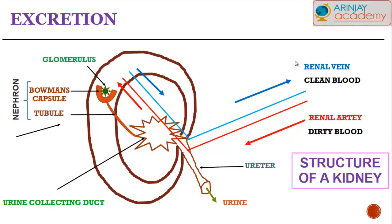Within the Bowman's capsule is a glomerulus that is connected by the renal vein to carry back the supplies. The tubule goes on further into the urine collecting duct after the nephron filters off the impurities, then it passes down into the ureter in the form of urea.